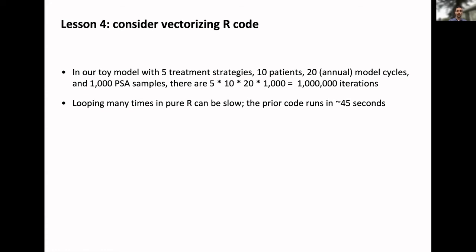In our example, we had five treatment strategies, 10 patients, 20 model cycles, and a thousand PSA samples. If my math is right, that's a million iterations. Just doing the simple example looping in pure R, so all the nested loops, the code runs in approximately 45 seconds, which is actually not so slow. But if the problem gets larger—we have more health states, more model cycles, more fine model cycles—that can get even slower. If we need to do a lot of different model scenarios, like different sensitivity analyses, we might not want to wait two minutes to run 40 different scenarios. So you have to think about the problem you're actually trying to answer and whether it's worth it to speed it up. If we vectorize the same code, I get it down to two seconds. So that's a pretty big speed up and the gains would be larger in bigger problems.